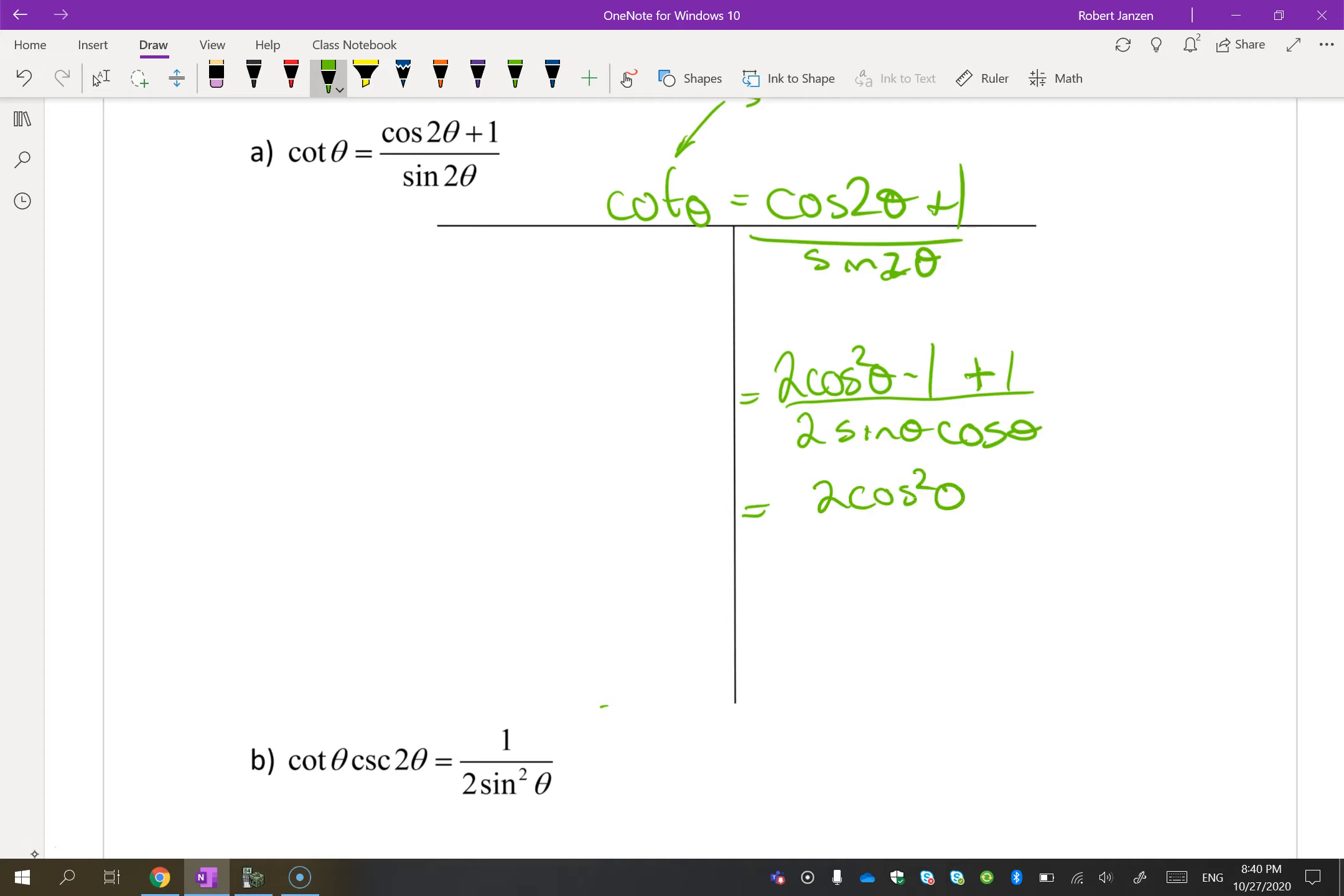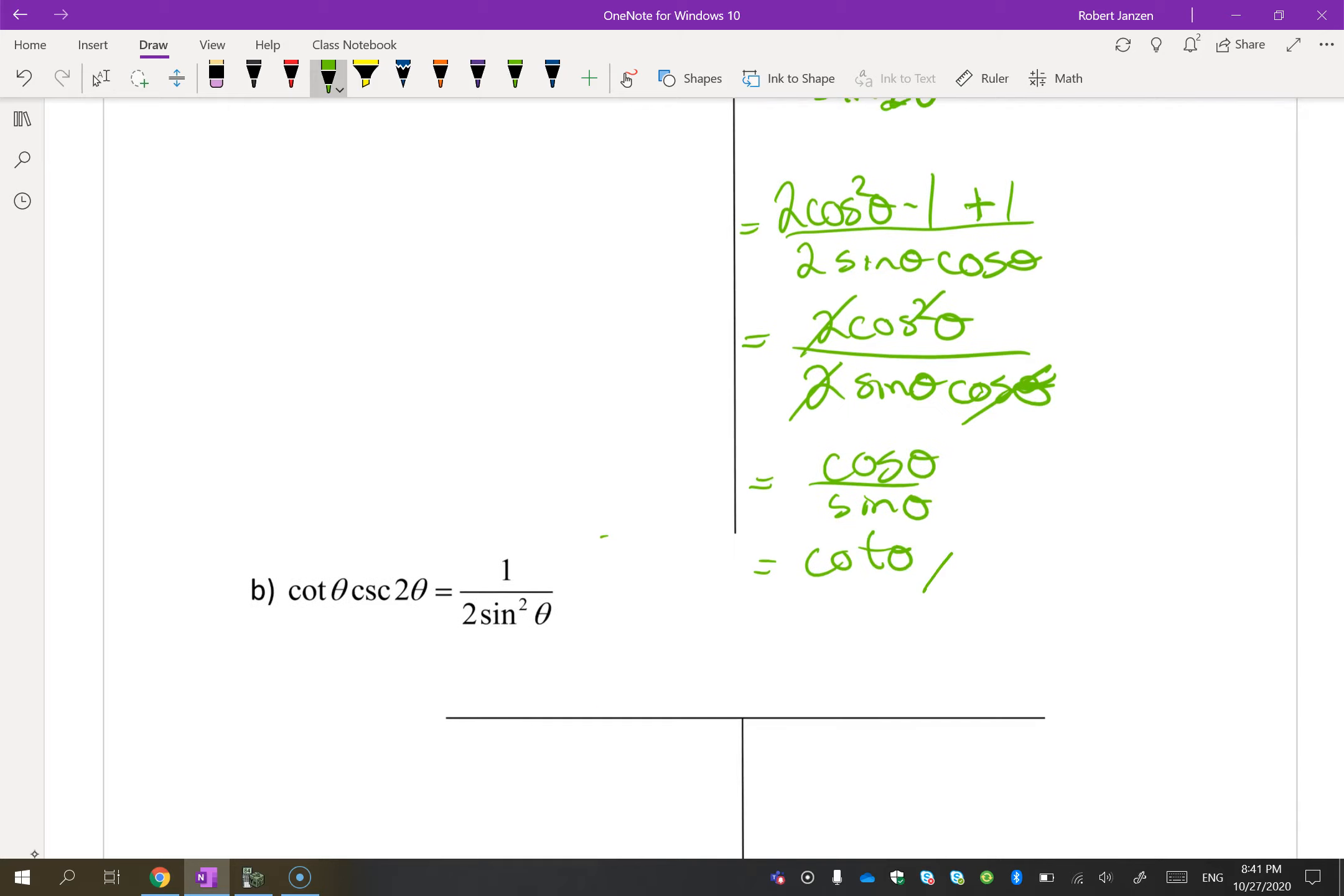So, simplifying this, I get 2 cos squared over 2 sine cos. And you can see that the 2s will cancel. And so will one of the cosines, which leaves me with cos over sine, which is equal to cotan. And then we're done.